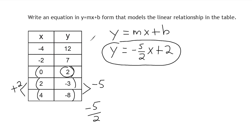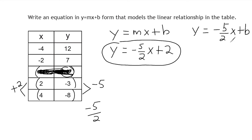Now, if you were given a function table that did not include a point with 0 as an x, you would have to do a bit more mathematics. Let's pretend we do not see that point in our table. We would start the same way — find the slope, which is negative 5 halves — then write our x, and solve for b. Take one point from your table; I'll take the last point. Substitute those x and y values in and isolate b. The x-value is 4, so we substitute x with 4 and multiply negative 5 halves by 4.